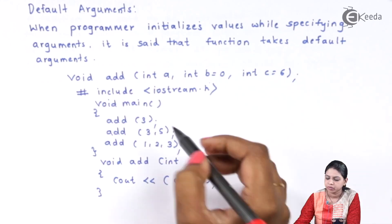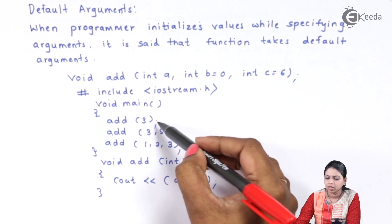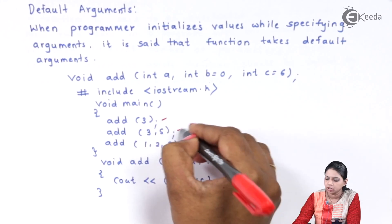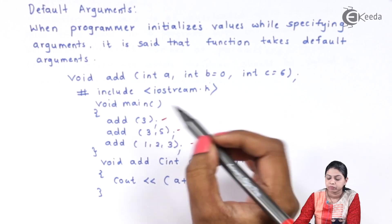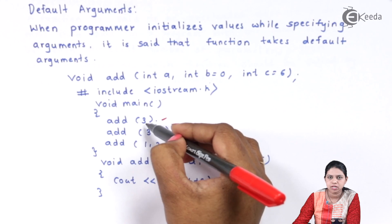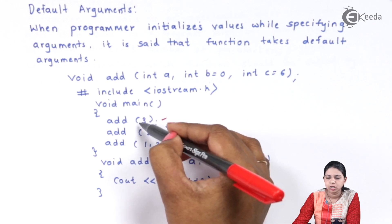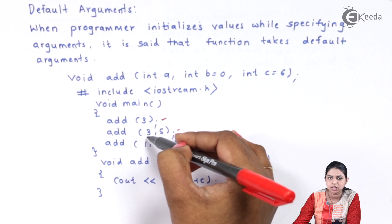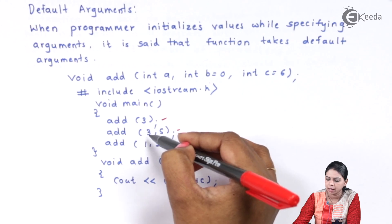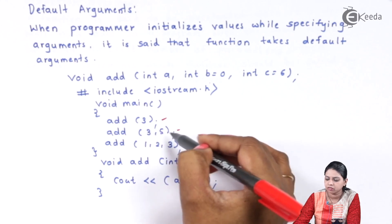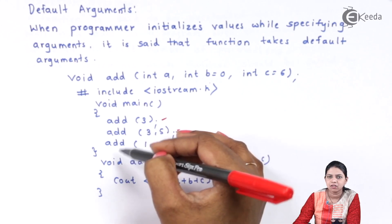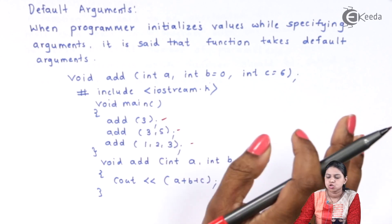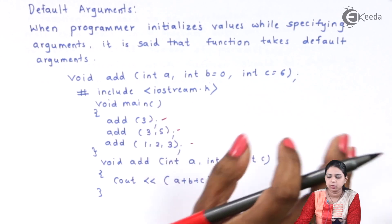Now if you see this program, I am calling the function add three times. The first time I called add, I passed only one argument: 3. The second time I called add, I passed two arguments: 3 and 5. And the third time I called add, I passed all three arguments.